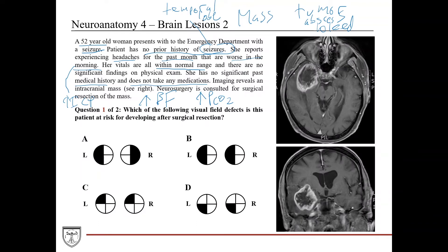With a patient presenting like this — new onset seizure, middle-aged — the next step is to get imaging to confirm suspicion of an intracranial mass. The imaging reveals an intracranial mass, and neurosurgery is consulted for surgical resection.